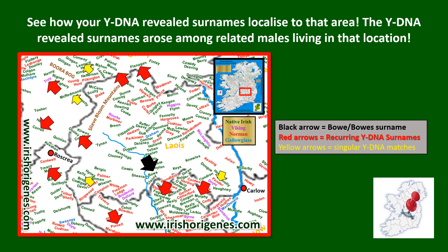Now this is where it gets interesting. You've magnified the area, and the test subject in this instance was named Boe. You can see Boe just near the Kilkenny border in County Laois, and what you begin to see is how all the recurring surnames you've identified — plus some singular surnames — all localize to this specific area. Boe is at the center and the surnames surround it, so these surnames literally arose among related males living in a specific part of Ireland — in this case County Laois and the Irish Midlands.